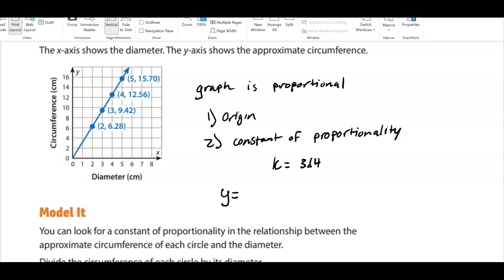So our equation for this is y is equal to our circumference, which is our y, is equal to our diameter, which is our x. y is equal to our constant, which is 3.14x. So think about what this means. If I give you any diameter, this is x, diameter. If I give you any diameter, all you have to do is multiply it by 3.14, and you'll get the circumference.